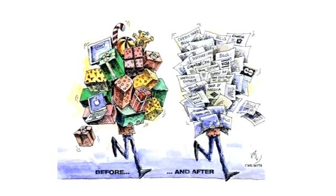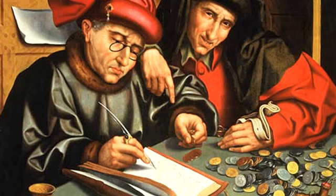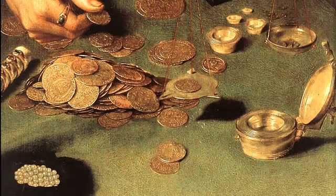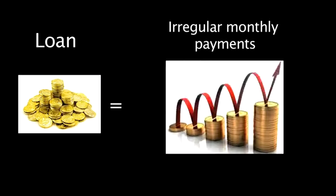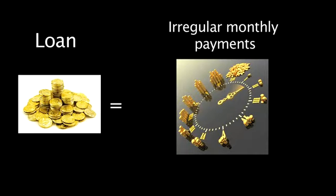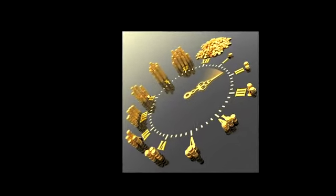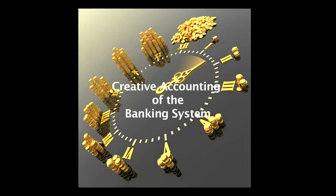Private banking changed economies based on credit into economies based on debt. Money lenders began to lend money on the condition that the customer repaid with a regular fee called interest. Later, when the customer couldn't repay some or any of his loan — which happened often enough — the interest due was added to the loan amount and interest was charged on that too. So the debt kept rising. That way, the bank kept making money without investing any money.